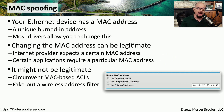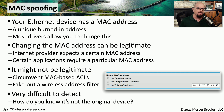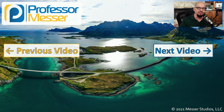Attackers know that MAC addresses are often used in access control lists, and if they can modify their MAC address, they may be able to circumvent existing security. Firewalls and wireless devices may allow or disallow communication based on the MAC address of the sending device, but MAC filters make it very difficult to determine whether traffic is from a legitimate device or a spoofed one — there's no way to tell just from the MAC address whether it's burned in or modified. Since MAC spoofing is only useful on a local subnet, part of the defense is limiting the scope and access of devices on your local network.